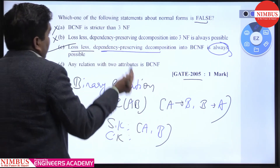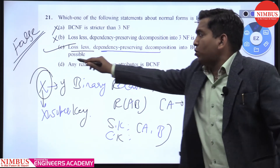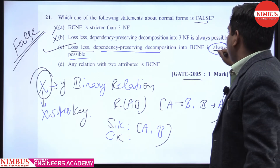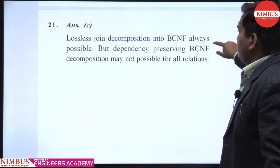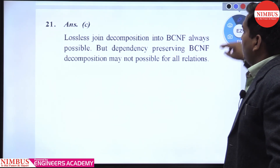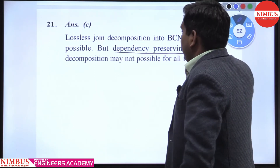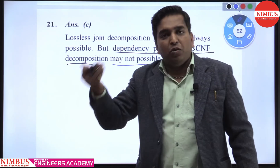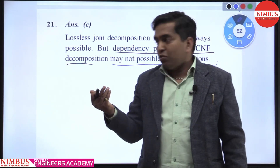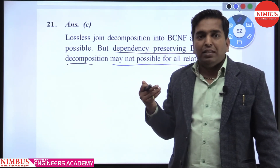So the false statement is: lossless join and dependency-preserving decomposition in BCNF is always possible. Lossless join decomposition into BCNF is always possible, but dependency-preserving BCNF decomposition may not be possible for all relations — it depends on the FD set available in the relation schema. Therefore, option C is the correct answer.